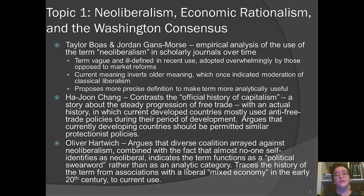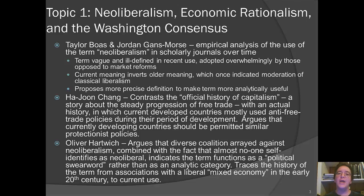The first reading is by Taylor Boas and Jordan Gans-Morse — an empirical analysis of the use of the term neoliberalism in scholarly journals over time. They count up how it's used, figure out the political perspective of pieces using the term, and analyze what meanings come out. They argue the term is vague and ill-defined, adopted overwhelmingly by those opposed to market reforms, inverting an older meaning that once indicated a moderation of classical liberalism. They propose a more precise definition, though such efforts almost never succeed once a word has become a general insult.